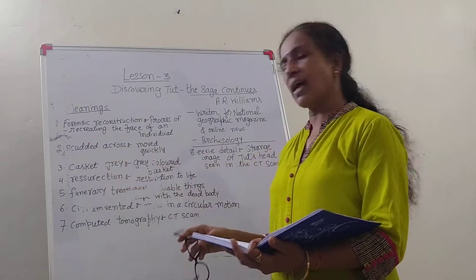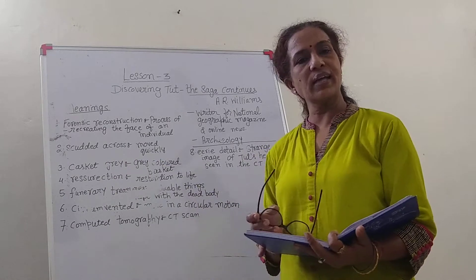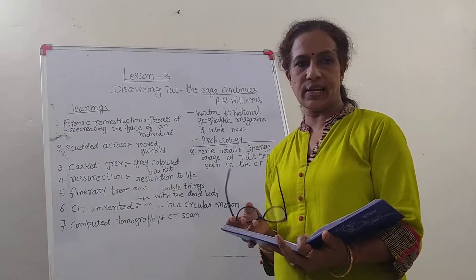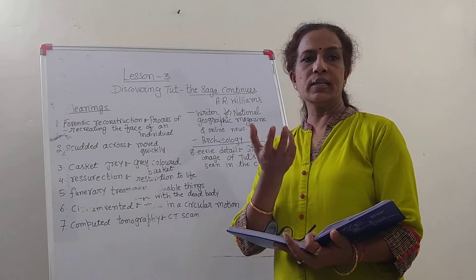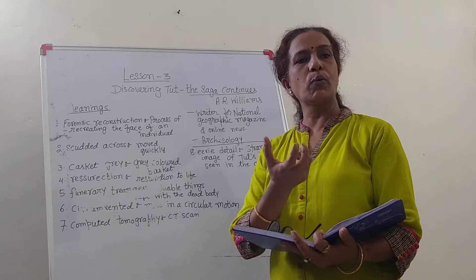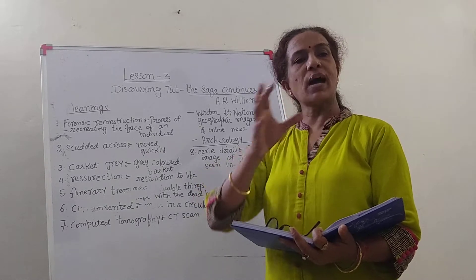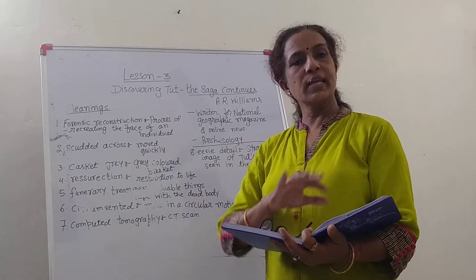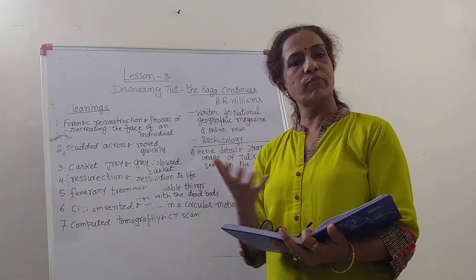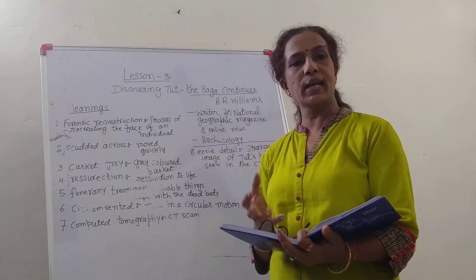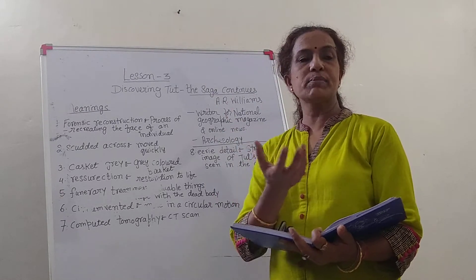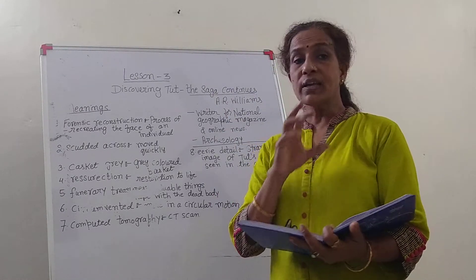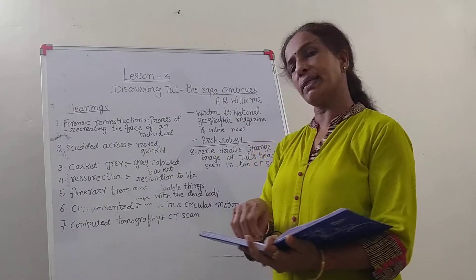Next is 'scudded' — that means moved quickly, relevant to the clouds in the chapter. Casket gray: casket is a basket, gray is the color. Here, due to cloud, as the stars in the lesson are covered up with cloud or surrounded by cloud, it seems as if they are contained in a gray-colored basket.